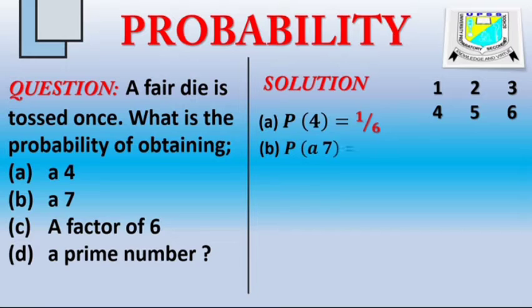A 7. There is no 7 in a die, so the probability of having a 7 is impossible, or it's 0.